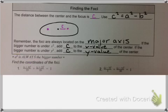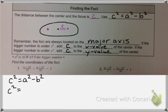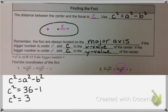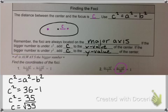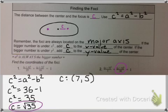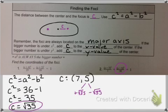Now for number 2, let's find our c value. I know c squared equals a squared minus b squared. In this case I know that my a squared is underneath my y value. So 36 minus 1 gives c squared equals 35, which means c equals the square root of 35. Now let's find the center of our ellipse — the center is positive 7, positive 5. Since my bigger number is under y squared, that's where my major axis is, so I'm going to add and subtract the square root of 35 from the y value.